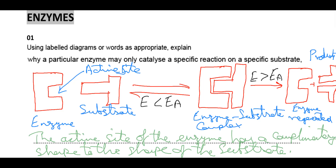The enzyme has been regenerated and products have been formed. So this is your lock-and-key mechanism. Using labeled diagrams, explain why a particular enzyme only catalyzes a specific reaction or specific substrate — because the active site of the enzyme has a complementary shape to the shape of the substrate. So enzymes are specific because they can only convert a specific substrate into their products.